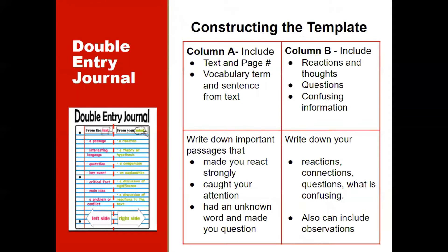Students will need to understand how to set up their double entry journal, and these steps can be posted as an anchor chart for students to use on their own. First, divide the paper into two vertical columns. Second, on the left-hand side, column A, write notes, quotes, key vocabulary, lists, descriptions, and page numbers. In the right-hand column, column B, write your reactions — including how vocabulary words are used, definitions, comments, feelings, objections, ideas, or illustrations. Once students have learned how to set up the template, they will be ready to journal.